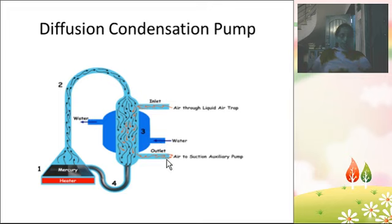With the help of the rotary oil pump, pressure of the order of 10 power minus 3 mm is obtained inside the vessel. Mercury in the first portion is gently heated so that the mercury vapor rises up the tube.